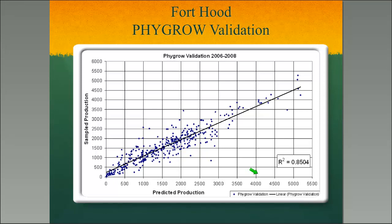Each dot is one of our study sites on Fort Hood. The Y axis is the actual standing crop we went out and clipped in the field, and the X axis is the predicted standing crop in FIGRO. We did fairly well with a 0.85 R-squared — for those not into statistics, we were about 85% accurate across all our sites.